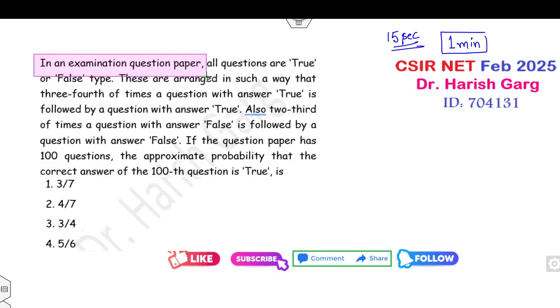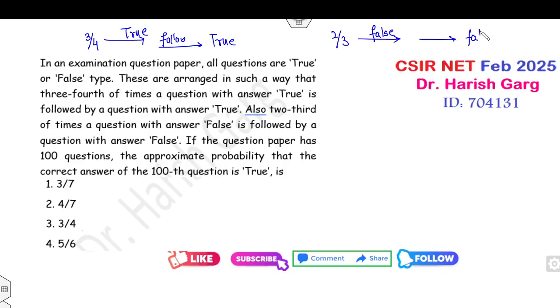In the examination question paper, all questions are either true or false type. They are arranged in such a way that 3/4 of the times, a question with answer true is followed by a question with answer true. Also, 2/3 of the times, a question with answer false is followed by a question with answer false.